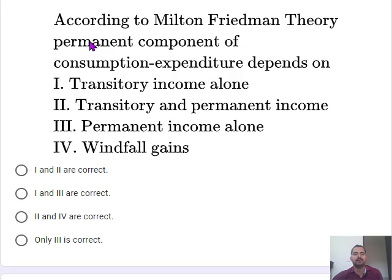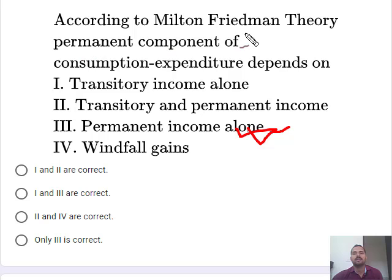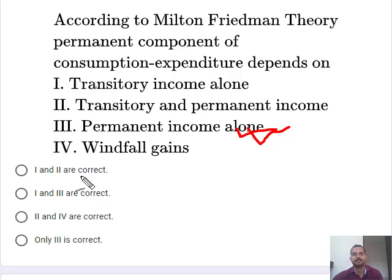The next question is very simple. According to Milton Friedman, the permanent component of consumption expenditure depends on permanent income alone. This is Friedman's permanent income hypothesis — the permanent component of consumption expenditure depends only on permanent income. So only option 3 is correct.